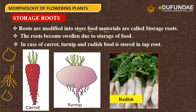These are different examples of crops such as carrot, turnip, and radish. We generally consume them. The tap root is modified to form and store food materials.